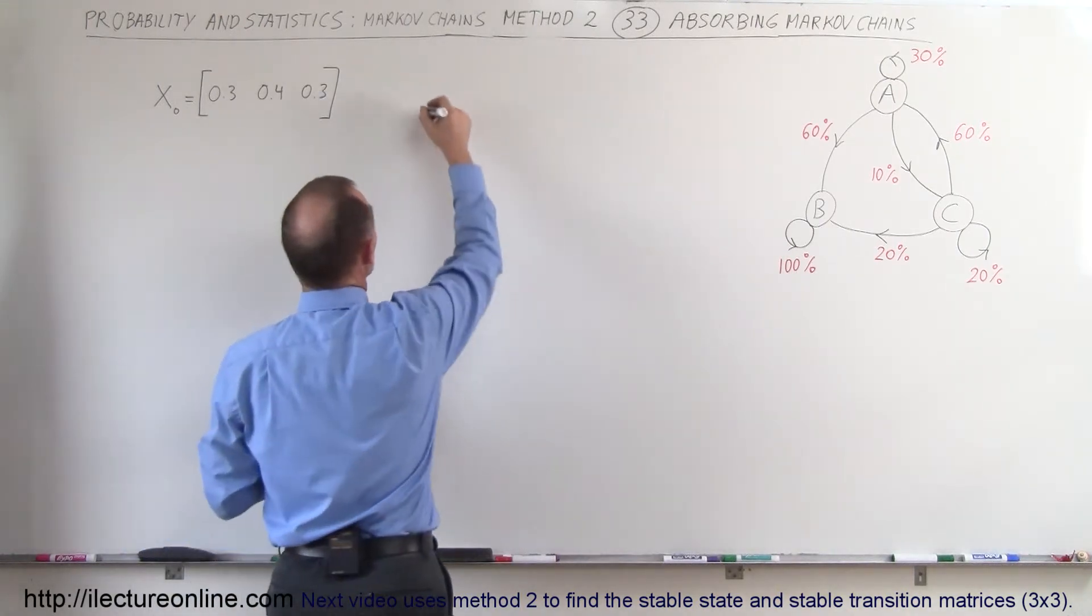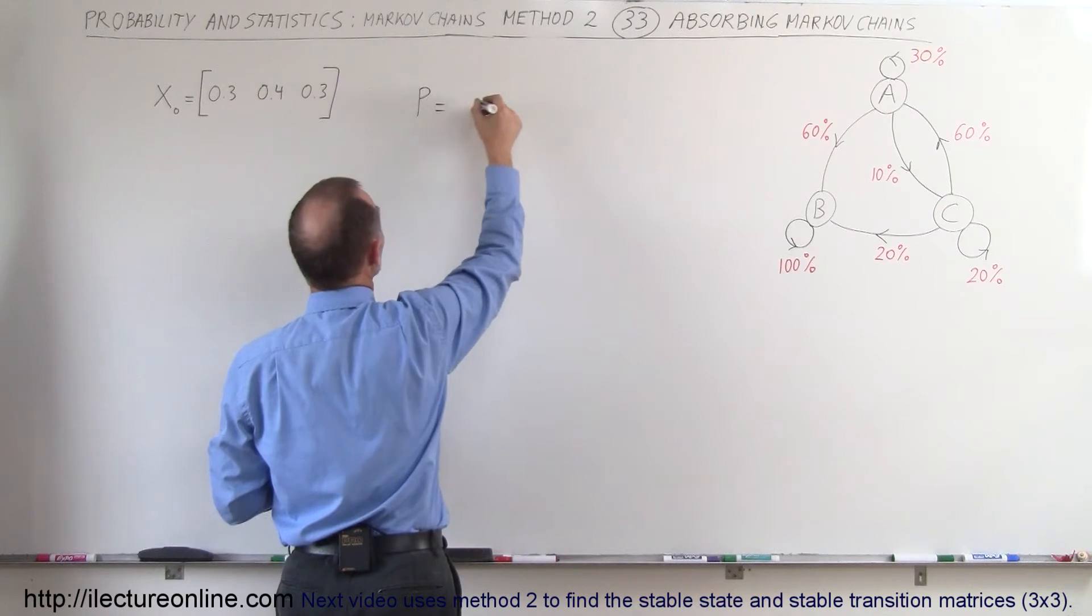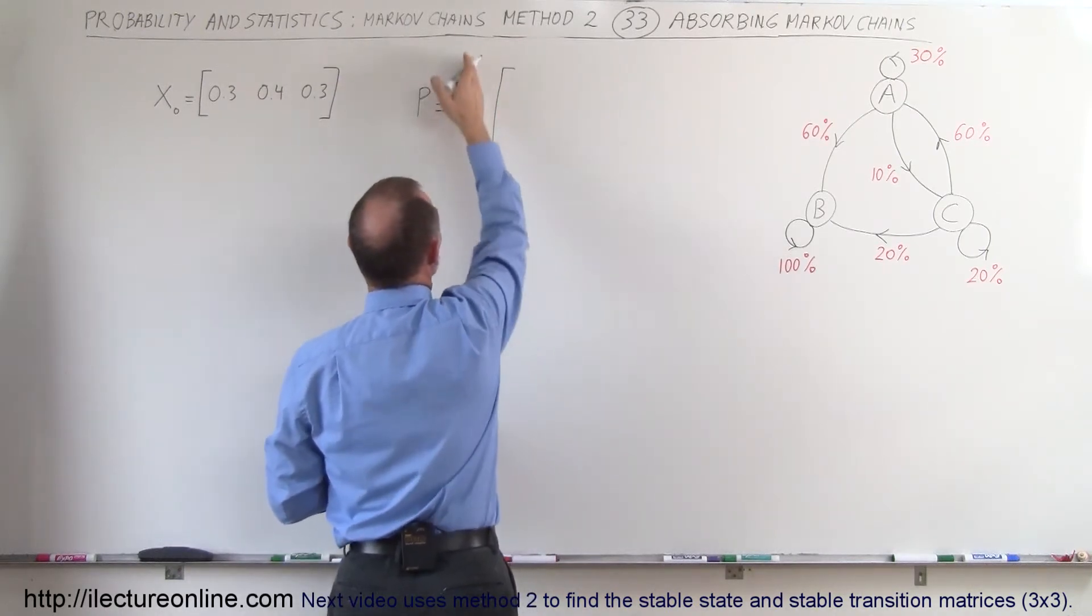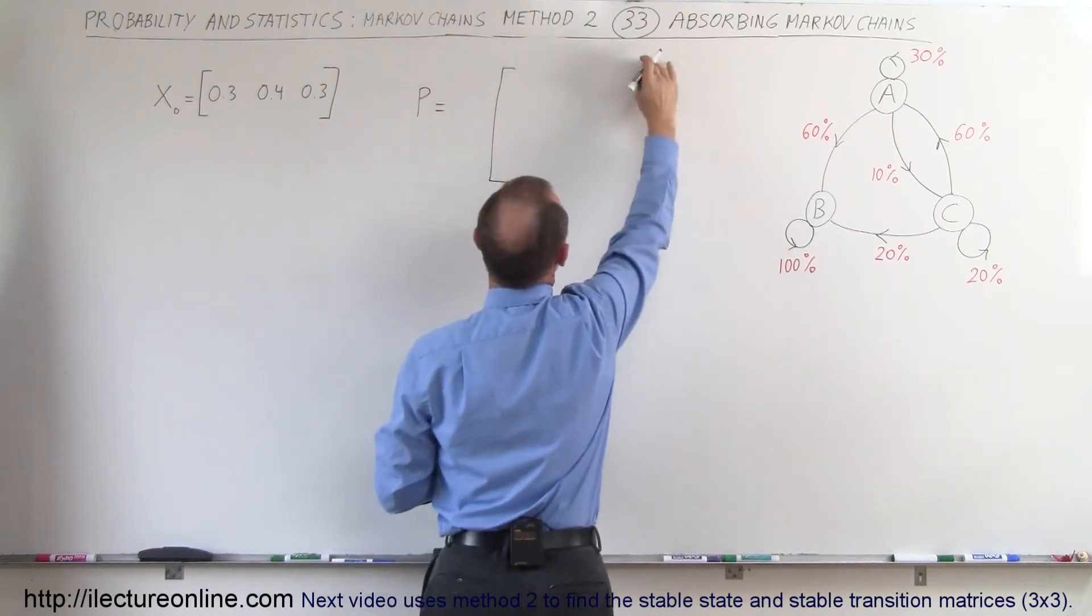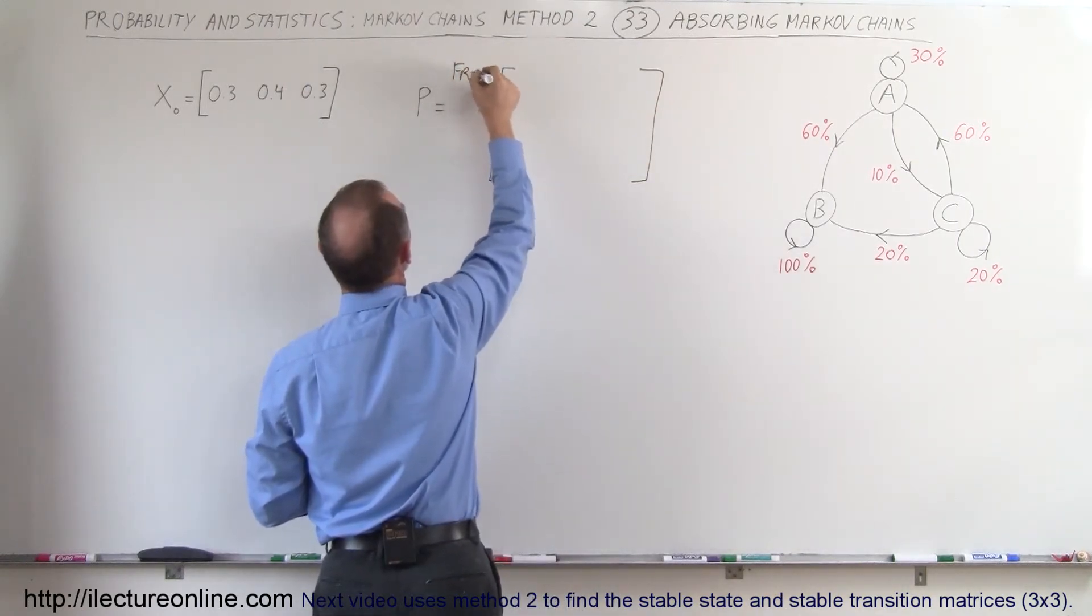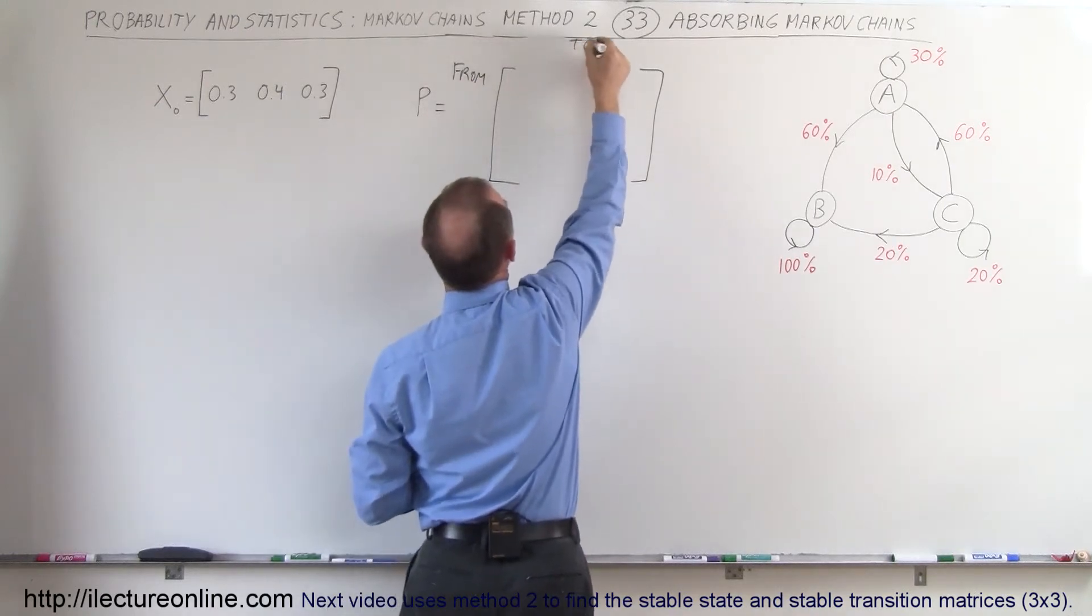So let's draw the transition matrix. So P is equal to, and remember that here's the stores where we're coming from, here the stores we're going to, so this would be from this side and to over here.